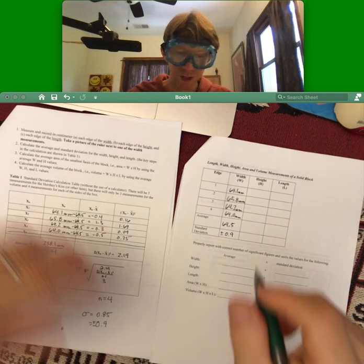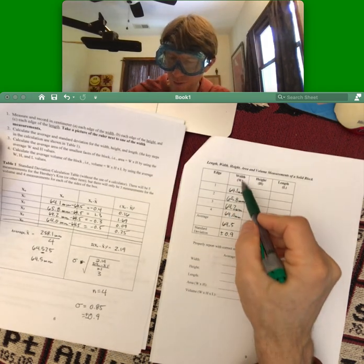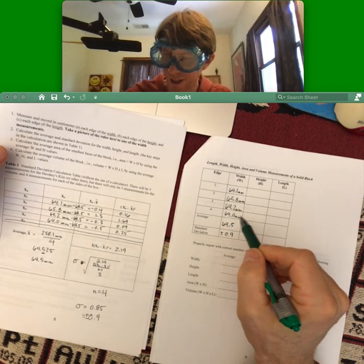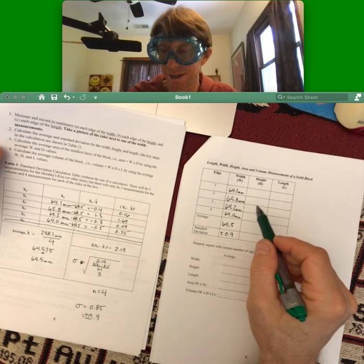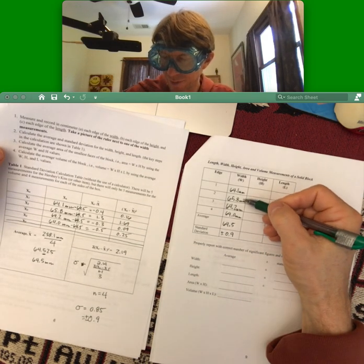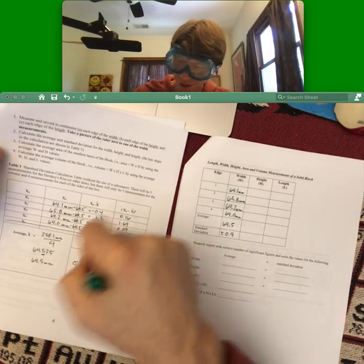So 64.5 plus or minus 0.9. You don't have to do the other ones this longhand way. You just have to do width this longhand way. You can, but I would consider doing it in Excel. In fact, I always like to put these numbers into Excel and just check anyway that my whole procedure works well.